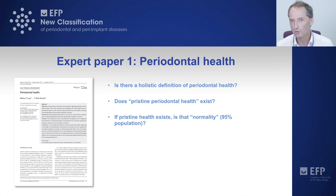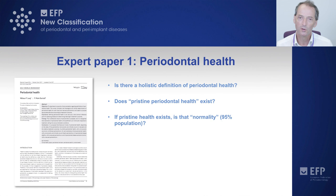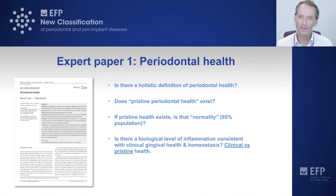So if pristine health does exist, and that means there is no gingival inflammation, then we would need to know that 95% of the population had no gingival inflammation to define health. And clearly that wasn't the situation, so there is a challenge there that we asked the two authors of this paper to address.